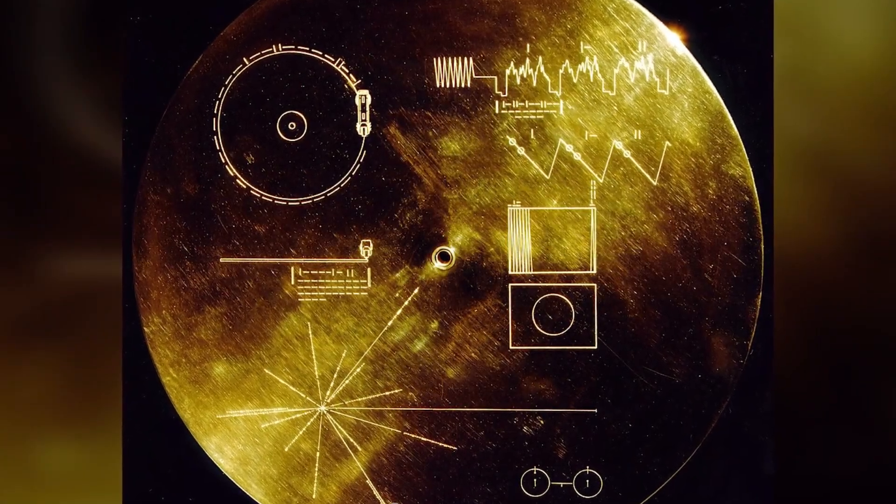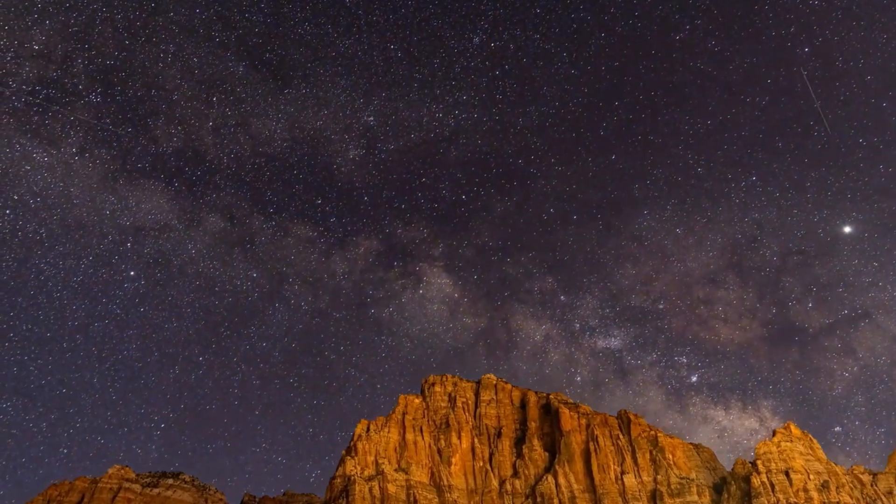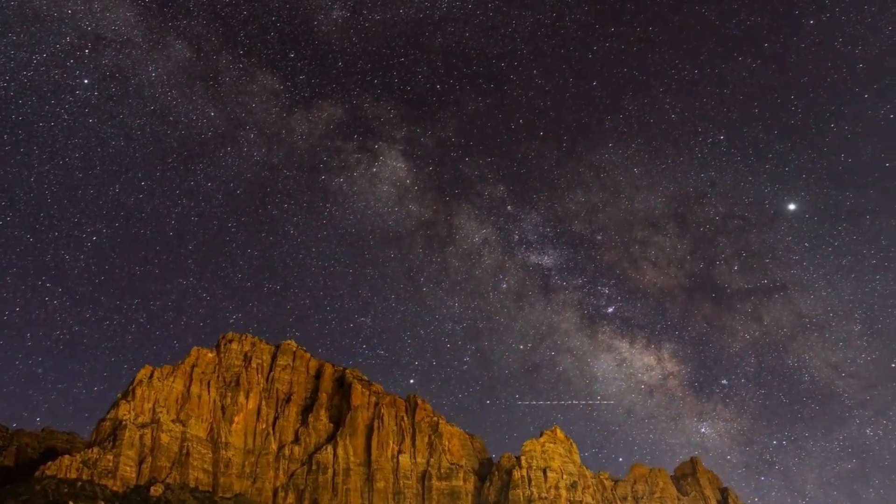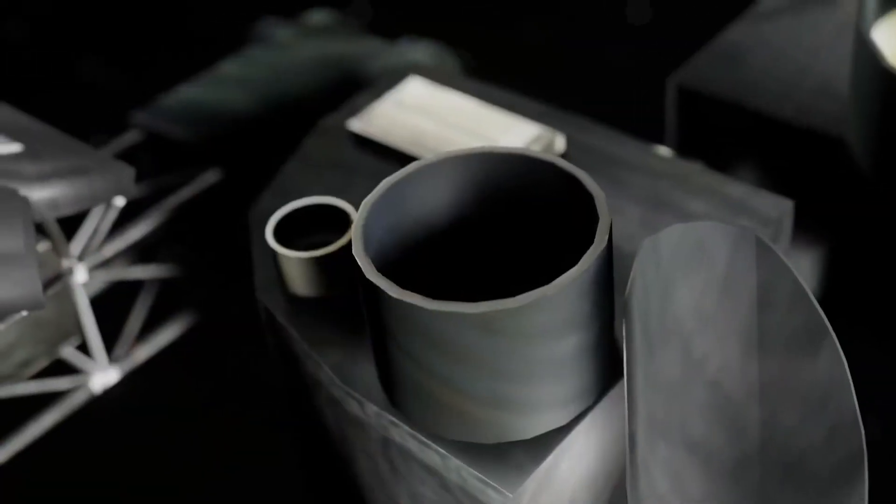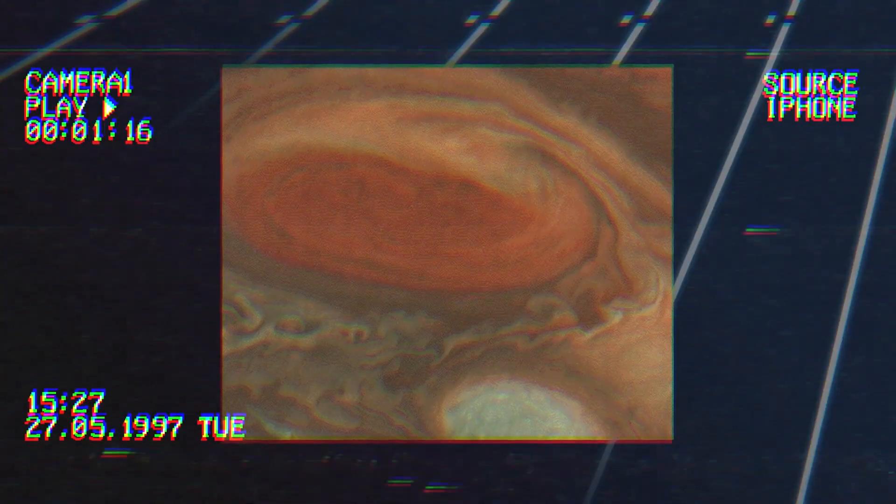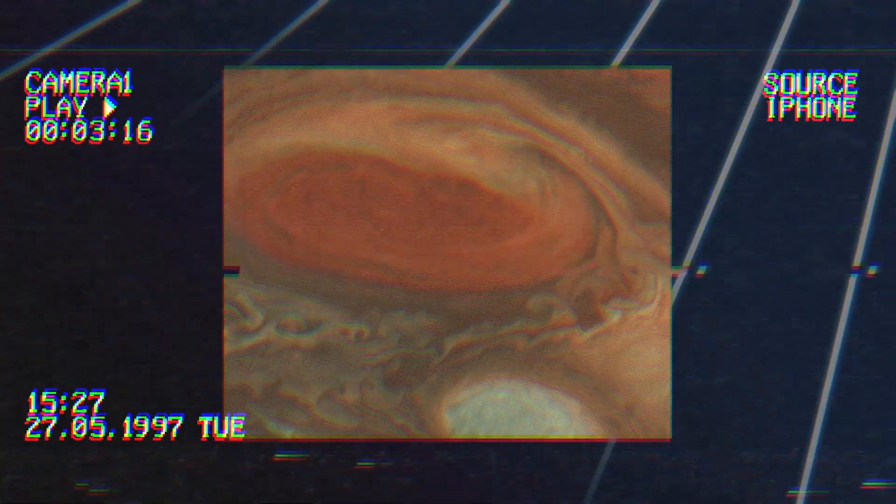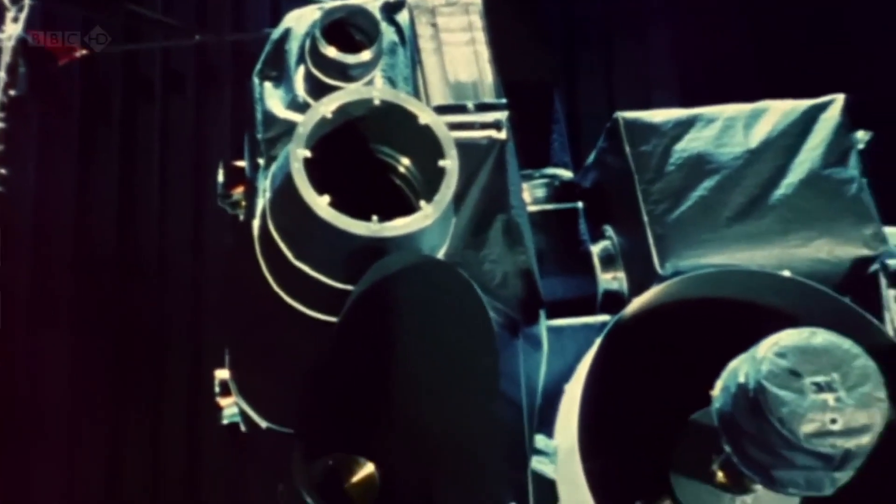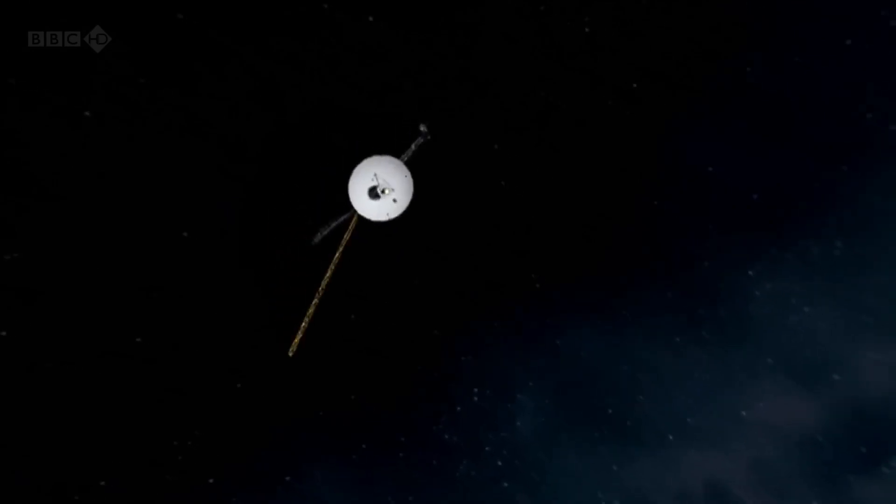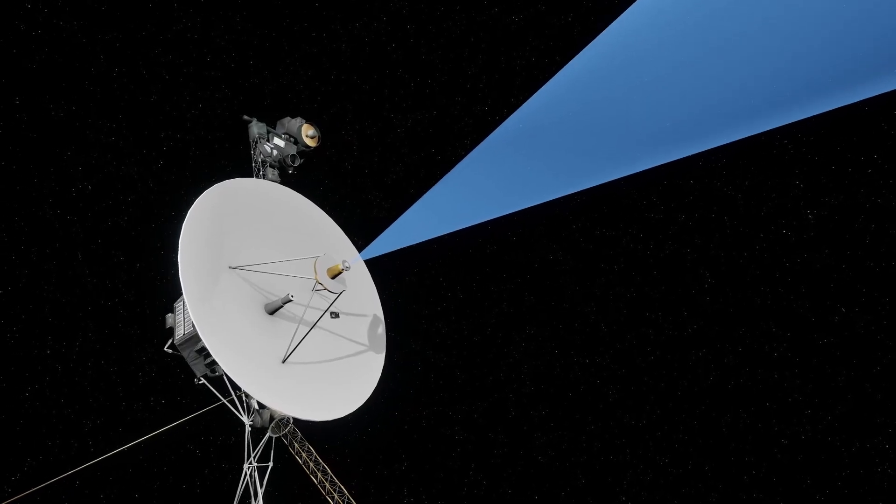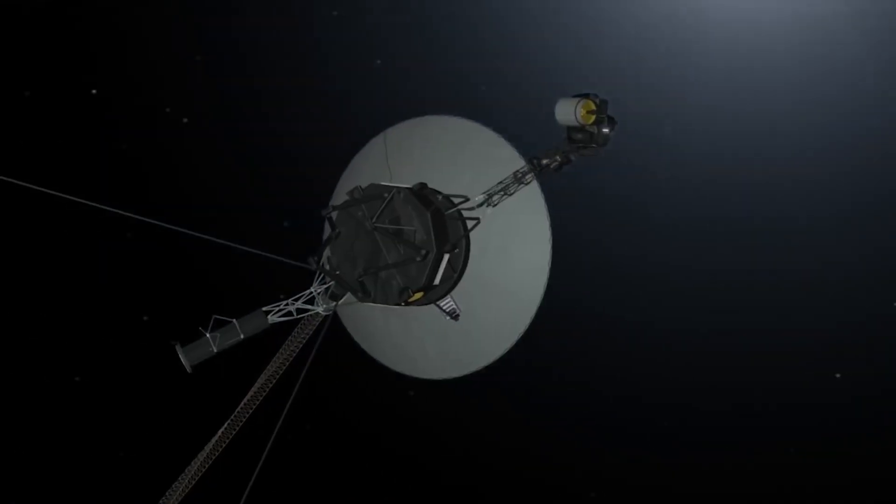But why should we care whether the Voyagers will meet them if we no longer exist by that time? We actually should, because the probes carry valuable cargo destined for distant civilizations, two golden records with a collection of information about humanity and our home planet. They contain photos of Earth, sounds of animals and birds, and words in various languages. It also contained communication of our solar system in relation to pulsar stars, and even instructions on how the record is to be played. This seemingly frivolous idea may well be the last proof of our existence.